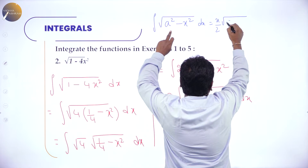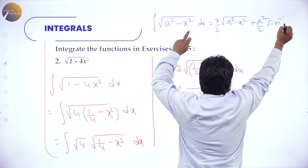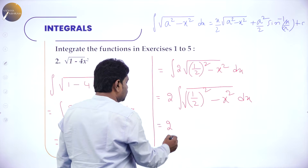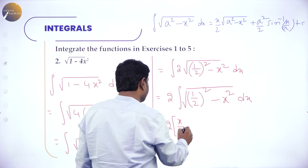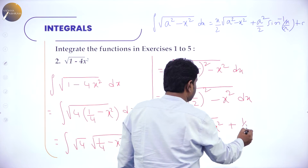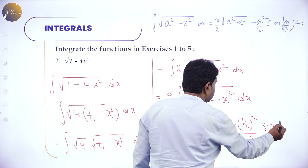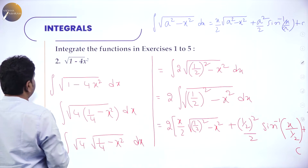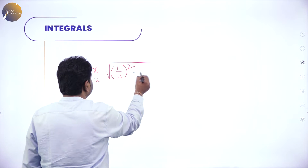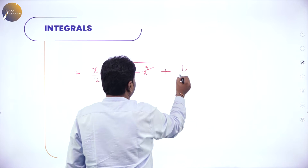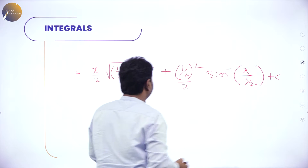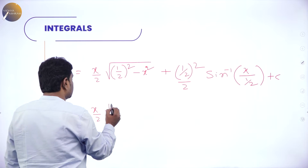The formula: ∫√(a² - x²) dx = x/2 · √(a² - x²) + a²/2 · sin⁻¹(x/a) + C. So now, with a = 1/2, the answer is 2 times [x/2 · √((1/2)² - x²) + (1/2)²/2 · sin⁻¹(x/(1/2))] + C, which gives x/2 · √(1/4 - x²) + (1/4)/2 · sin⁻¹(2x) + C. Simplify this.